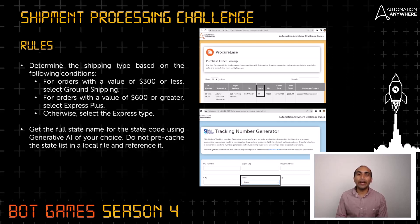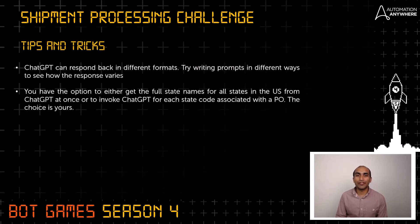Use Generative AI to get the full state name for the state code corresponding to each order in the ProcureEase application. Do not pre-cache the state list in a local file and reference it. For tips and tricks: ChatGPT or Generative AI from any other service provider may respond in different formats, so try writing different prompts to see how the response varies. You can choose to get the entire state names for all the state codes in the US at once.